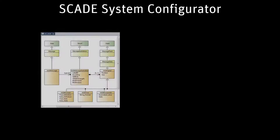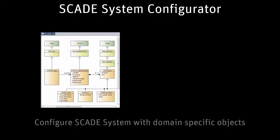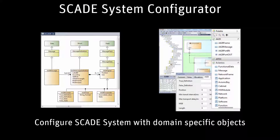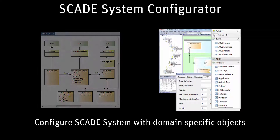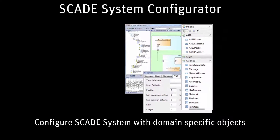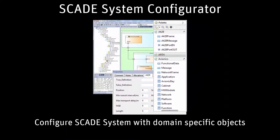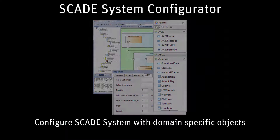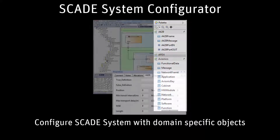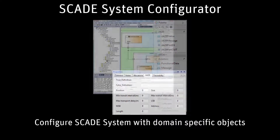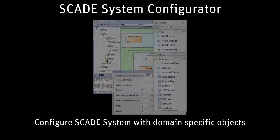The SCADE System Configurator is an independent module that allows methods and tools engineers to configure SCADE System to manage domain-specific objects. It defines a dedicated SCADE System project, the meta model of the domain-specific objects, through a simplified UML class diagram. It enables the deployment of the generated configuration to automatically customize the SCADE System IDE with domain-specific object creation palette, dedicated object properties, customized graphical styles, and tables.